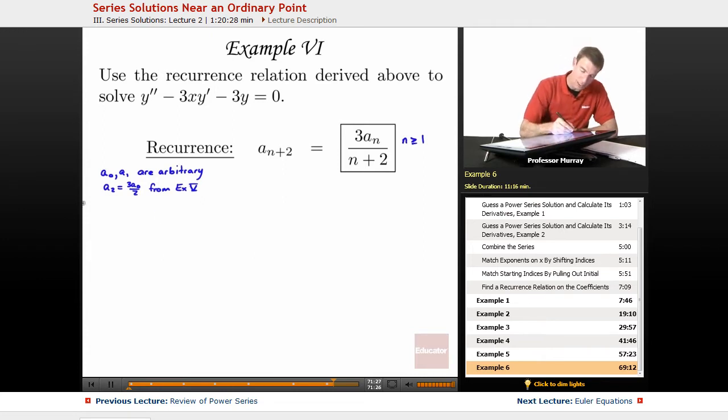And now the recurrence relation is going to kick in, so I'm going to start out by plugging in different values of N, starting at N equals 1, because that was the first value for which my recurrence relation is valid. So when I plug in N equals 1 to the recurrence relation, I get A3 is equal to 3A1 over 3, which simplifies down just to A1.